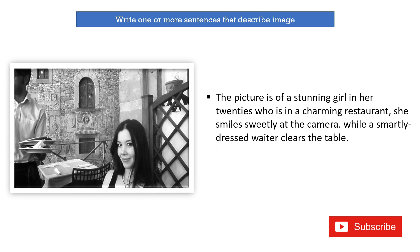A more polished sentence: 'The picture is of a stunning girl in her 20s who is in a charming restaurant. She is smiling sweetly at the camera while a smartly dressed waiter clears the table.' This is the way you can describe one or more sentences. Next, the image might be a painting, poster, cartoon, or comic strip — there may be different types of pictures.